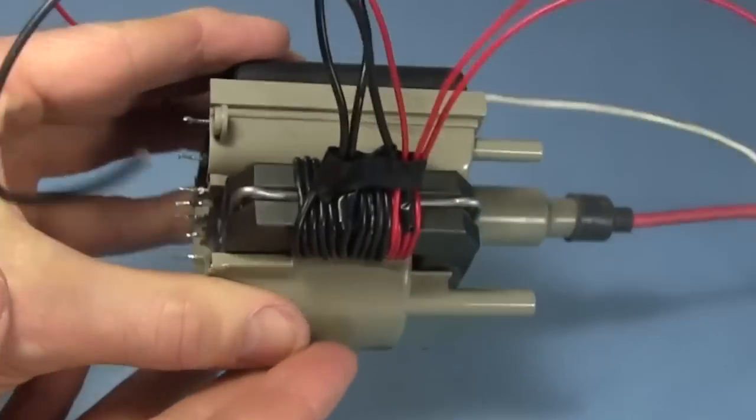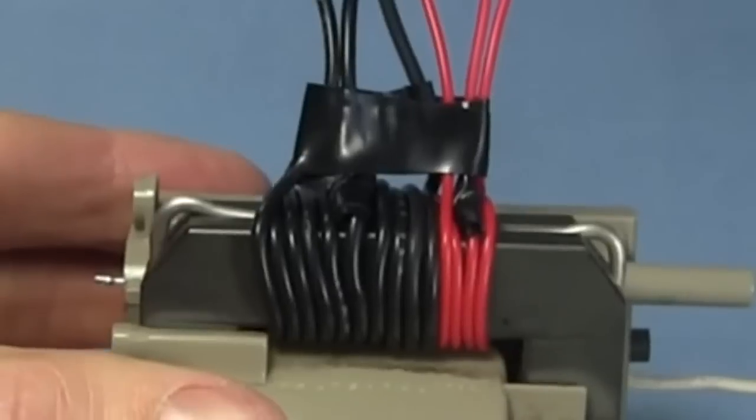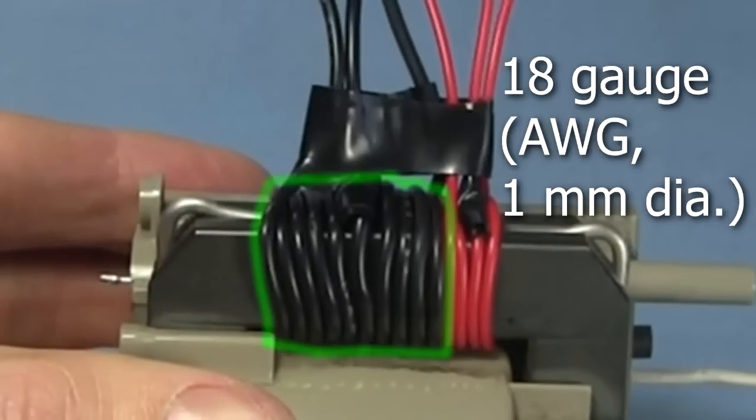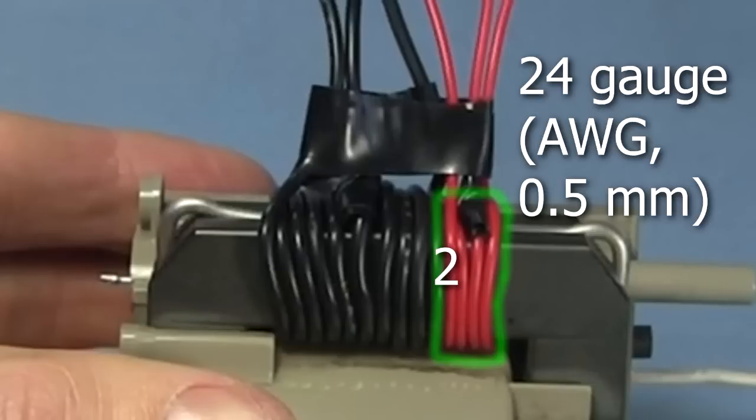Before doing any testing, I had to put these coils on the flyback transformer. Both coils are center tapped, meaning there's an extra wire connected to the middle. This black one is 18 gauge wire and has 5 turns on this side and 5 more on this side. This red one is 24 gauge wire and has 2 turns on this side and 2 turns on this side.